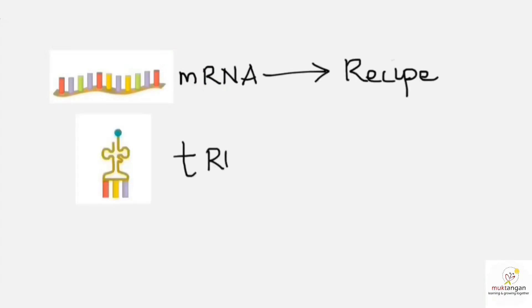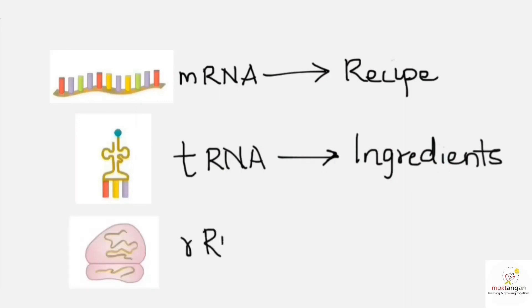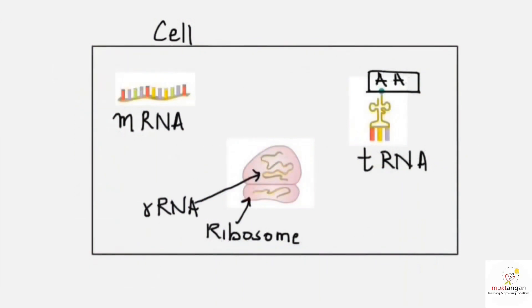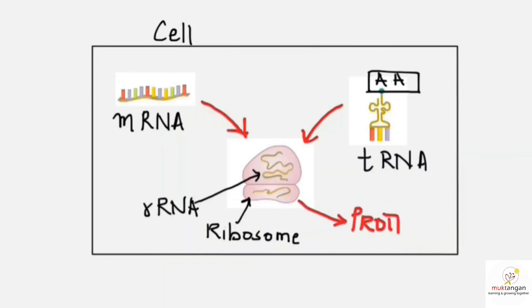The ingredients are brought by tRNA, and rRNA is the machinery needed to prepare the protein. Suppose this is a cell with a ribosome in it. mRNA, present in the cytoplasm, brings the recipe to the factory. tRNA, that's transfer RNA, carries the ingredients — basically amino acids — to the factory. rRNA, that's ribosomal RNA, present in the ribosome, helps in the production of proteins.